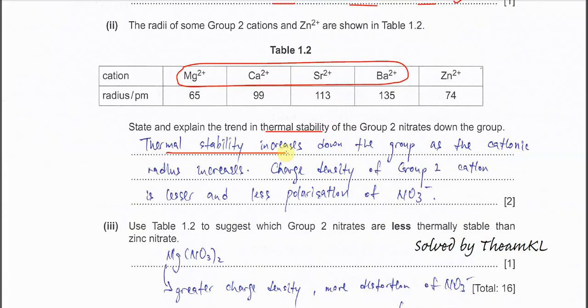When the cationic radius increases, the charge density of the group 2 cation becomes lesser. Size is larger, charge is the same, so therefore the charge density of group 2 cations is lesser and there is less polarization of the nitrate ion, or less distortion on the nitrate ion. Therefore, the N-O bond gets less weakening, meaning it's harder to break.